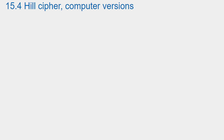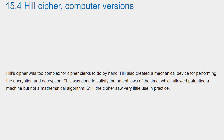Section 15.4: Hill Cipher Computer Versions. Hill's cipher was too complex for cipher clerks to do by hand. Hill also created a mechanical device for performing the encryption and decryption. This was done to satisfy the patent laws of the time, which allowed patenting a machine but not a mathematical algorithm. Still, the cipher saw very little use in practice.